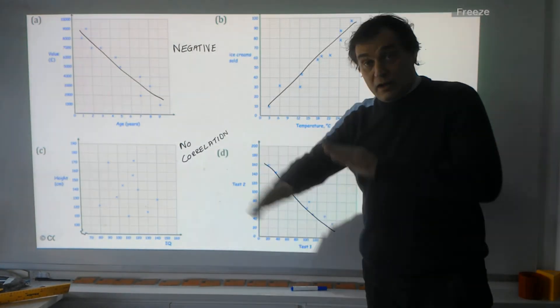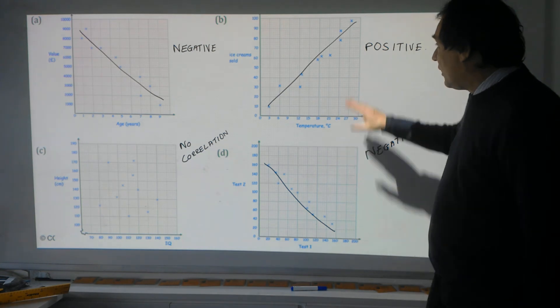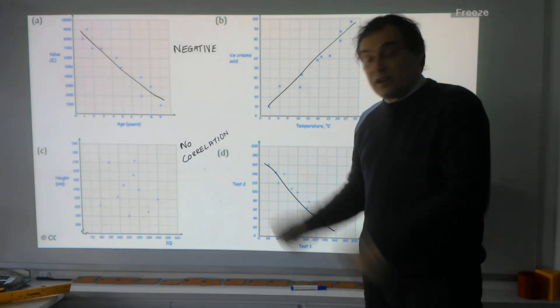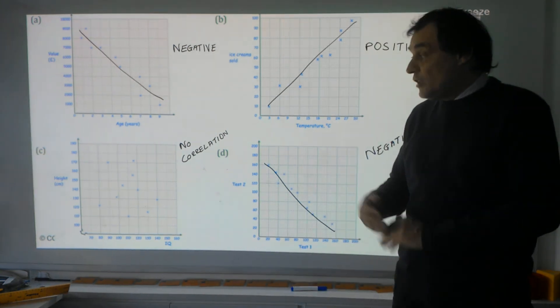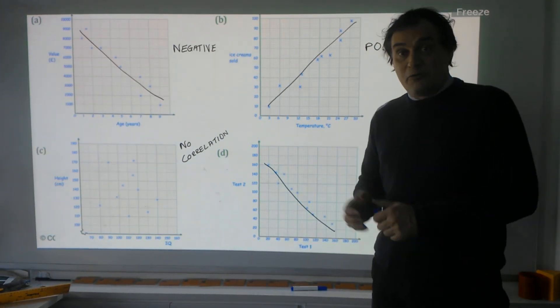Those are the three types of correlation. Negative: when one's going up, the other's going down. Positive: when both are moving in the same direction. And no correlation: when there's no link between the two variables at all.